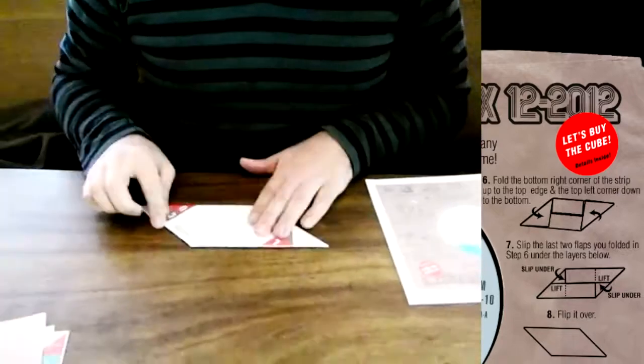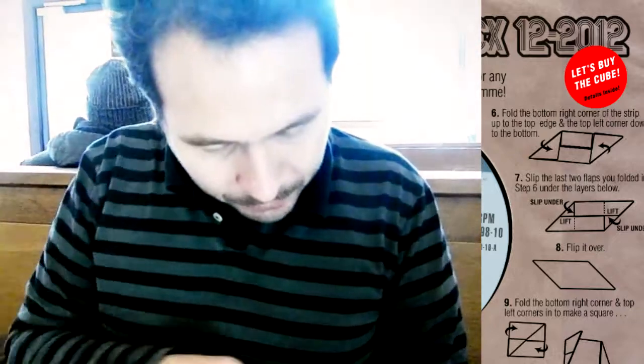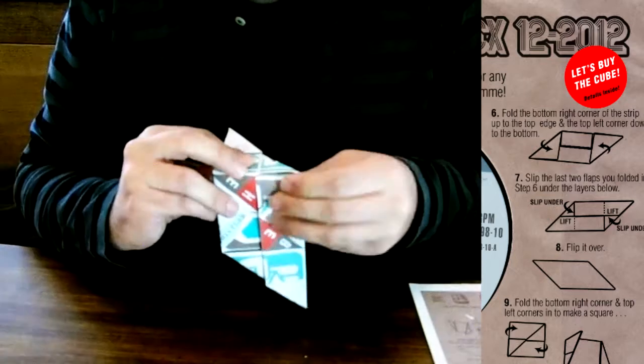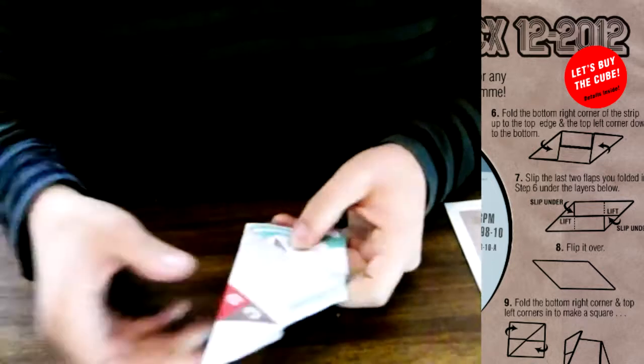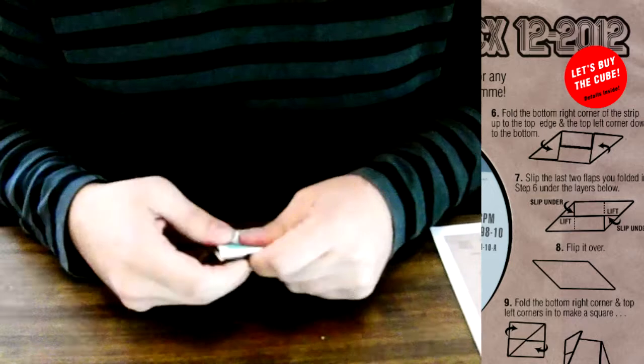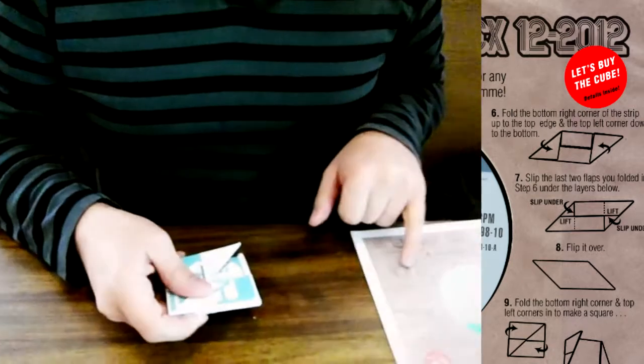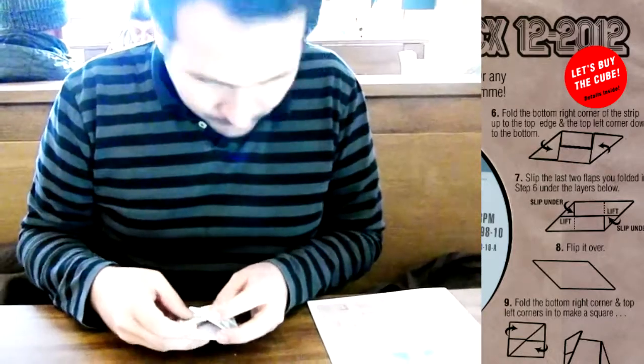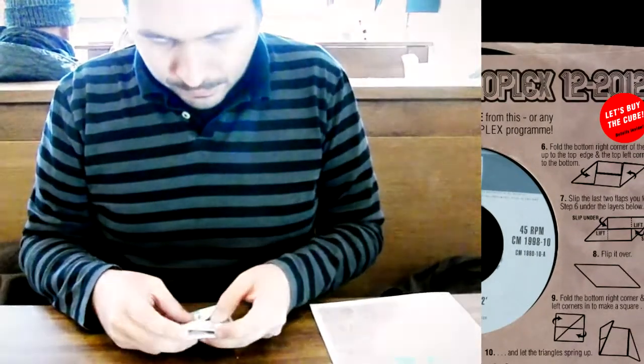That is super cool. Flip it over. Fold the bottom right corner and top left corners into make a square. So it should be something like this. And I would imagine that you do the same. And another triangle square. What does it say? Spring away.